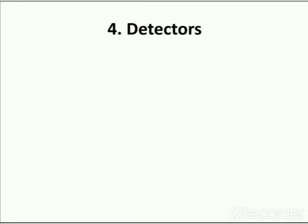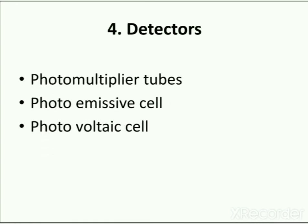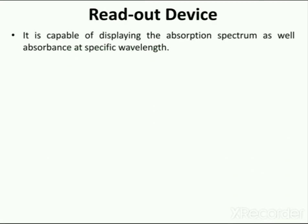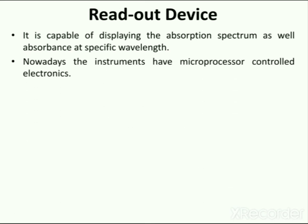Detectors used in flame photometry are photomultiplier tubes, photoemissive cells, and photovoltaic cells. These detectors were already studied in ultraviolet-visible spectroscopy. The last part of the flame photometer is the readout device, which is capable of displaying the absorption spectrum as well as absorption at a specific wavelength. Modern instruments have microprocessor-controlled electronics that provide outputs compatible with printers and computers, thereby minimizing the possibility of operator error in transferring data.